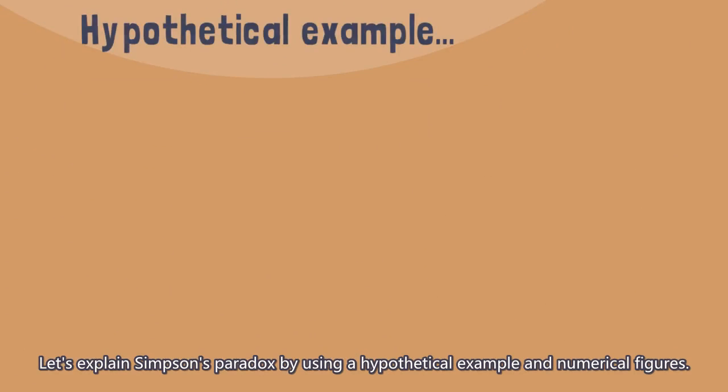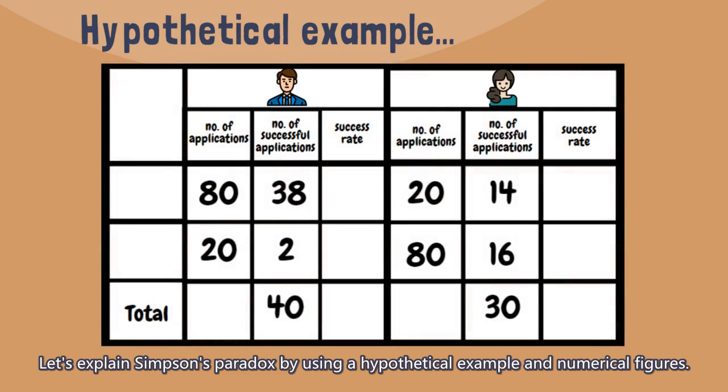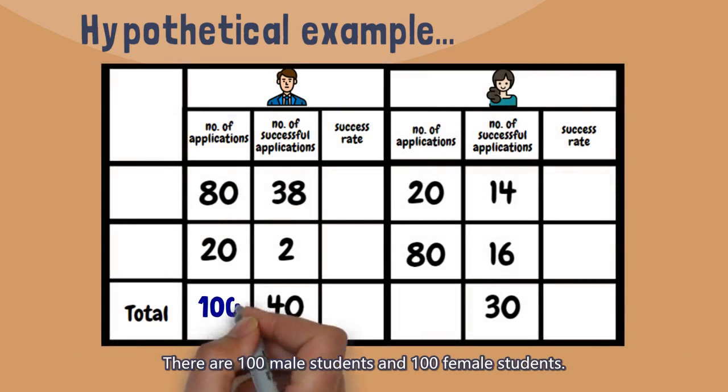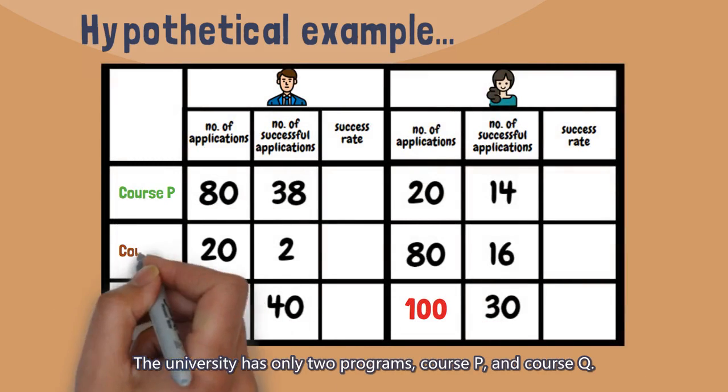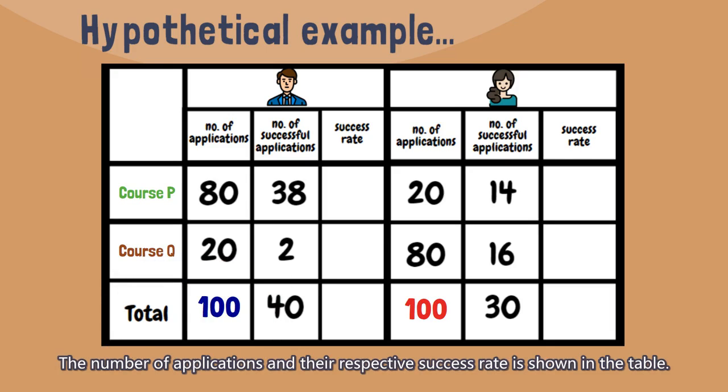Let's explain Simpson's paradox by using a hypothetical example and numerical figures. There are 100 male students and 100 female students. The university has only two programs, Course P and Course Q. The number of applications and their respective success rate is shown in the table.